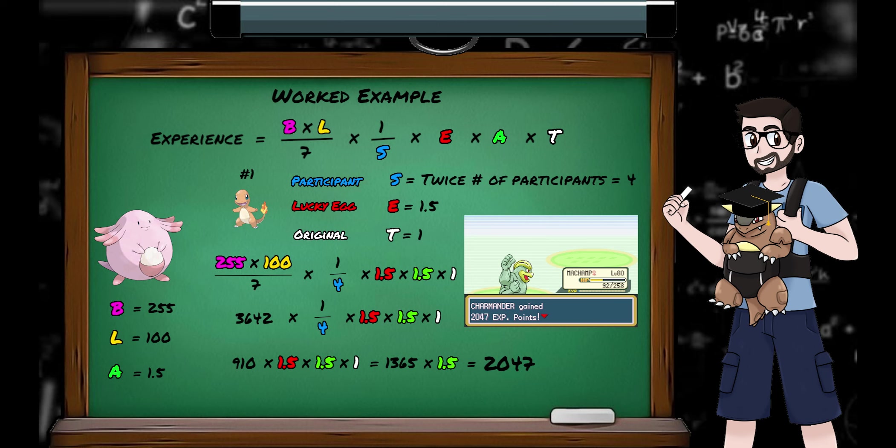S, for a participating Pokemon with XP shares in play, is equal to twice the number of participants, which is 4. A quarter of 3642 gives us 910. Then we're holding a lucky egg, so that's times 1.5, which is 1365, and this is a trainer battle, so that's another times 1.5, giving Charmander 2047 experience.